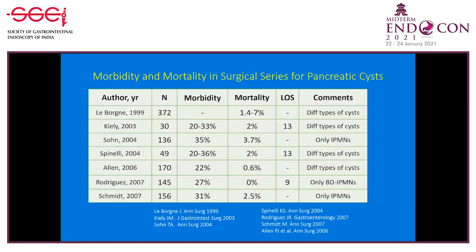When surgery is required for the pancreas, it is important for patients to understand the associated morbidity and mortality. Summarizing multiple studies over about nine years in about a thousand patients with pancreatic cysts, morbidity is between 20 and 36 percent and mortality is between 0 and 7 percent. Most commonly cited literature associates mortality from Whipple's at about 2 percent and morbidity at about 30 percent. Length of stay is also up to two weeks in these patients.